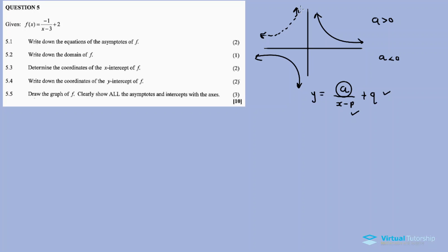If a is less than zero, if a is negative, the hyperbolic function is in the second quadrant as well as the fourth quadrant.